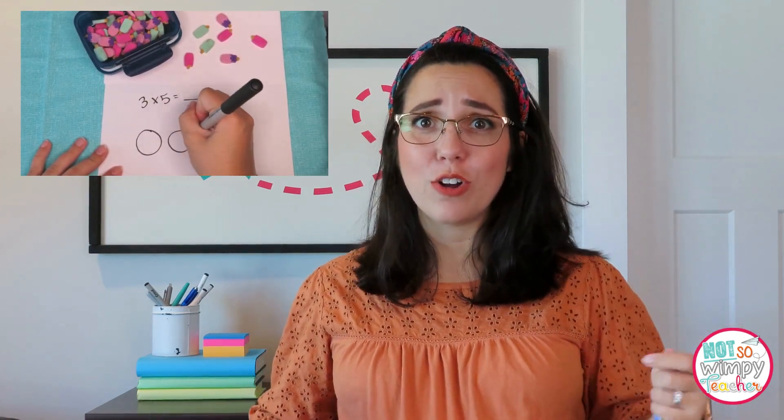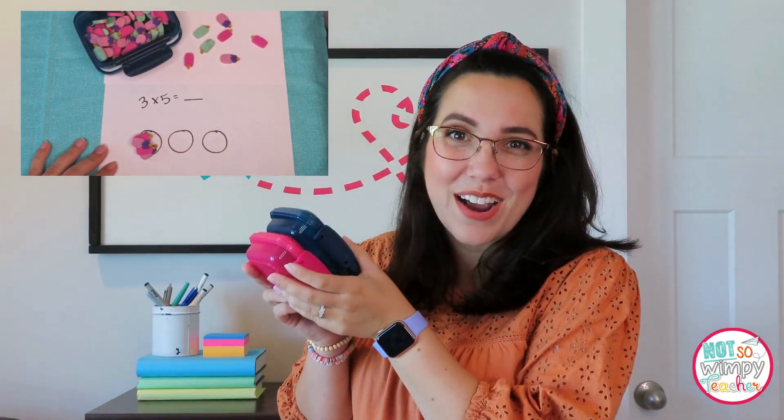Tip number two when you're teaching your students about equal groups is the use of manipulatives. I think it is so important that our students can truly get their hands into the math on this multiplication strategy. I love to use tiny erasers, unifix cubes. Students can even just be drawing x's or o's inside of larger circles to represent those equal groups. By working to model with manipulatives, it's helping students really understand this strategy in a very concrete way.